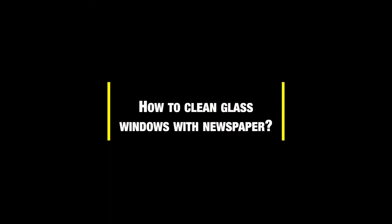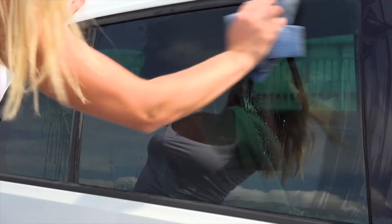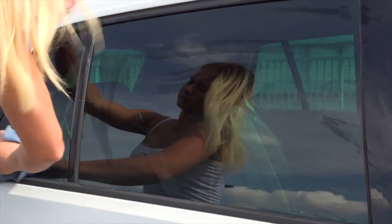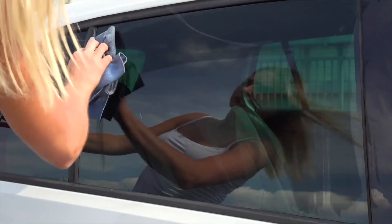How to clean glass windows with newspaper: If you do not have a suitable cloth, a newspaper can be a good substitute. Simply spray the cleaner on the window and scrub or rub in circular motions — the newspaper works just fine.